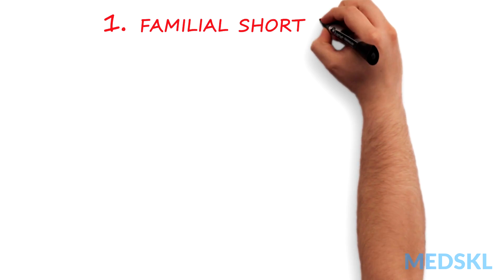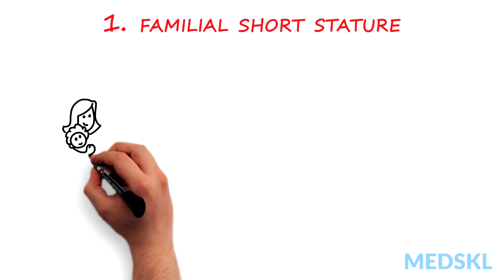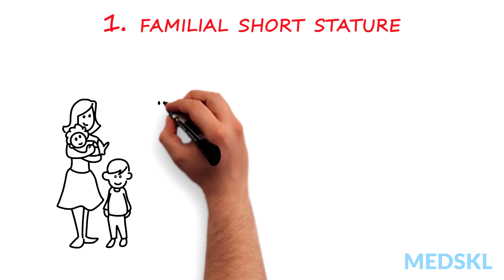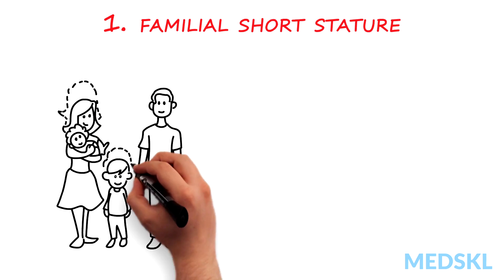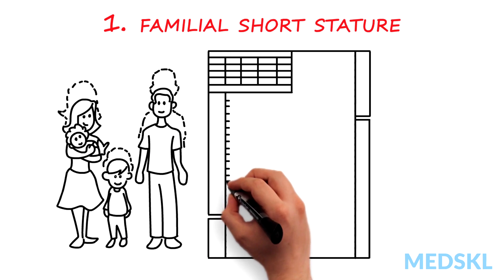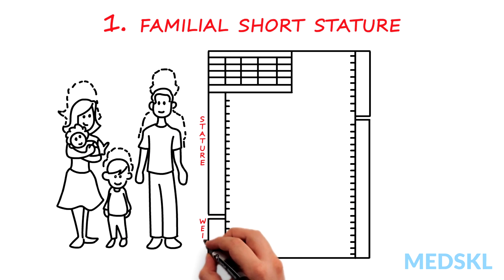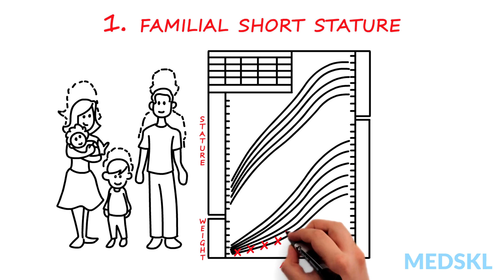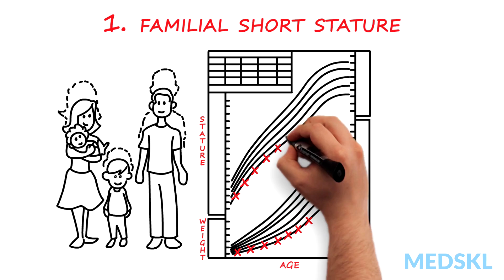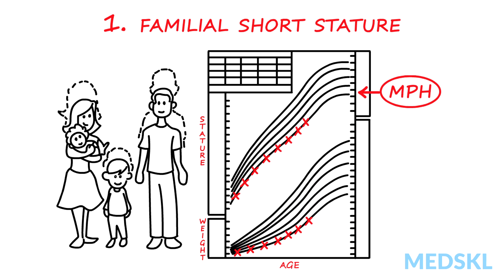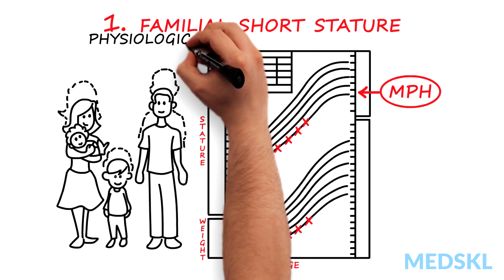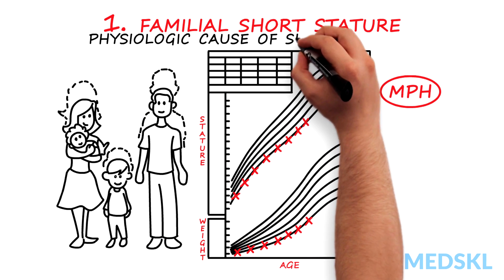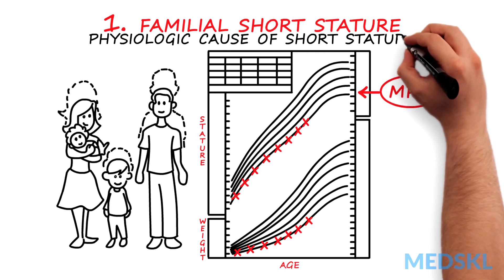The first pattern shows familial short stature, where the child's growth curve is at the low end of the chart but is tracking appropriately toward their mid-parental height. This represents a physiologic cause of short stature.